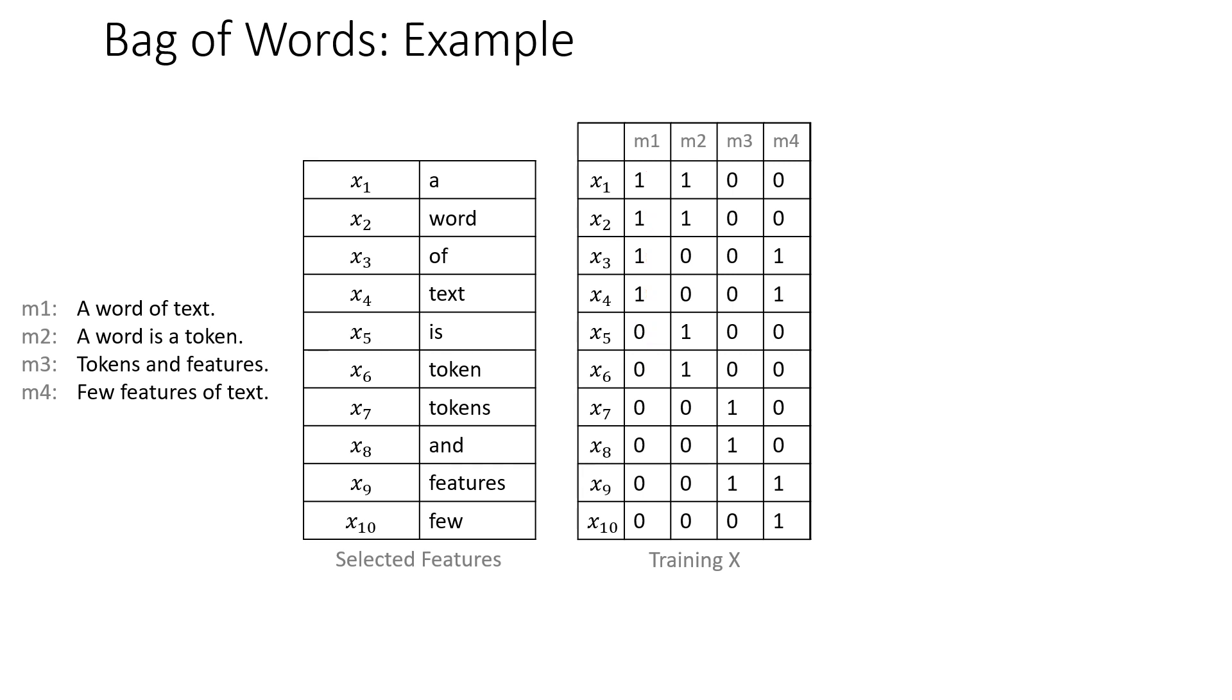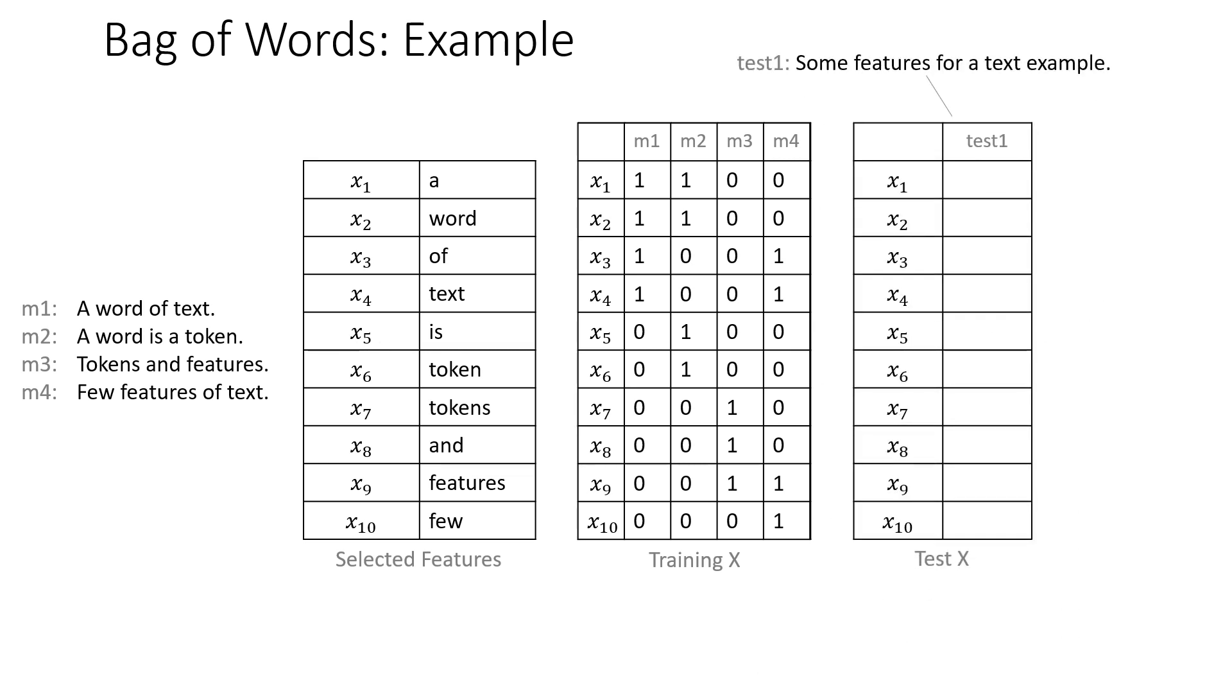Now, if you want to apply a model that you built with this feature set at runtime, what you have to do is get test one here is a test message that you want to apply your model to. So some features for a text example, not the best sentence I've ever written. But this is an example. So x1 is associated with the word 'a' does this message have an 'a' in it? Yeah, it does. So you'd have a one there.